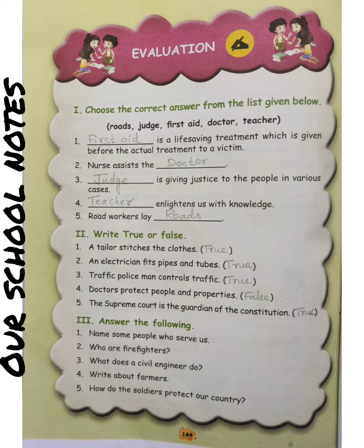Fourth one: Doctor protects people and properties. The answer is False. Fifth one: The Supreme Court is the guardian of the constitution. The answer is True. Thank you all.